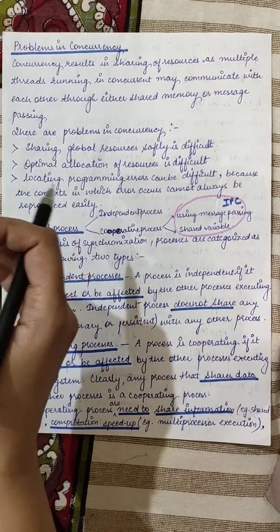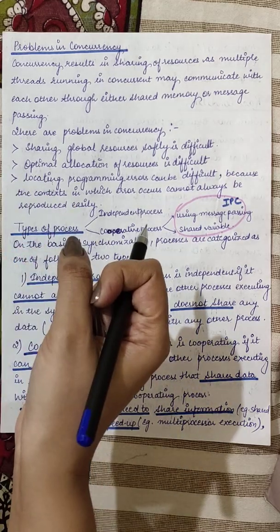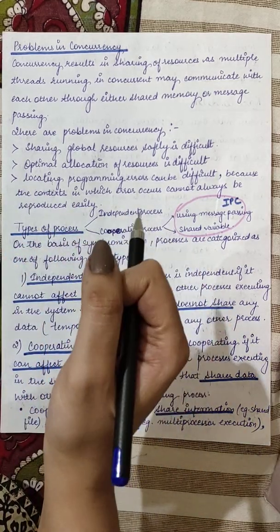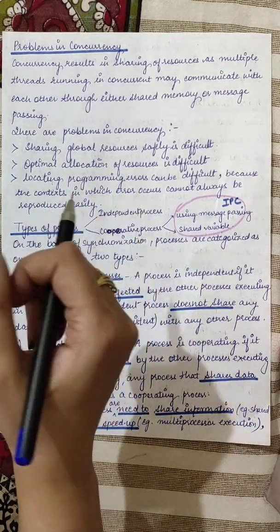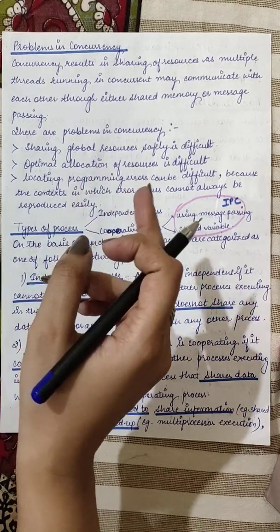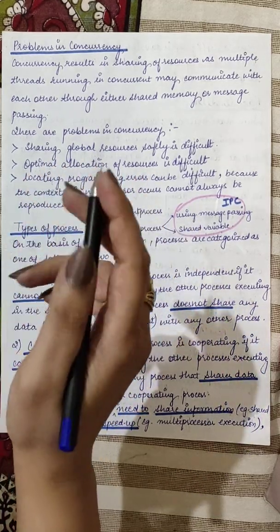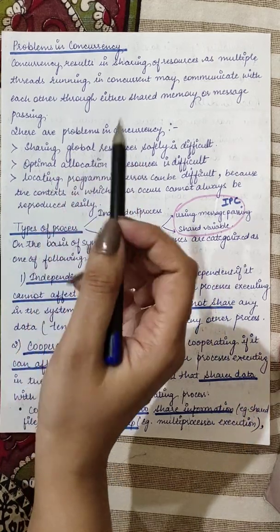Koi task kisi phase mein hogi, koi task kisi phase mein hogi - that is concurrency. Parallelism saari tasks ek saath chal rahi hain, execute ek saath ho rahi hain alag alag processors pe. Concurrency ek hi processor pe ek se zyada task chal rahe hai, jo ki task kisi phase mein hai, koi task kisi phase mein hai.